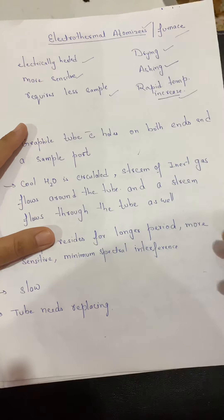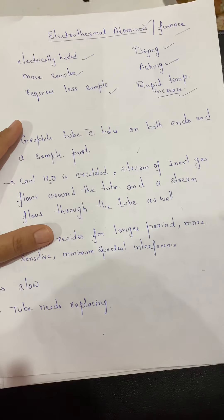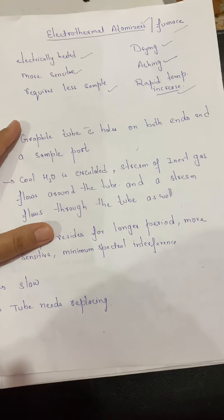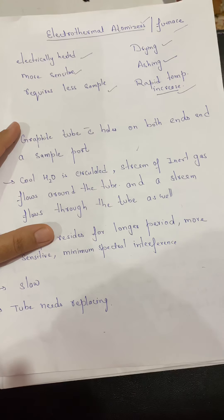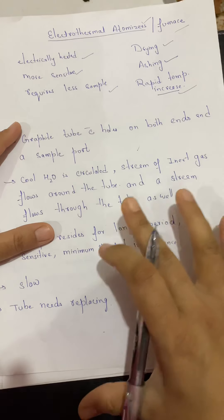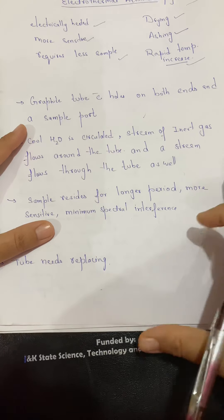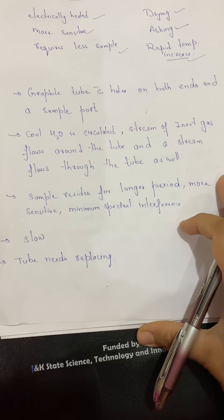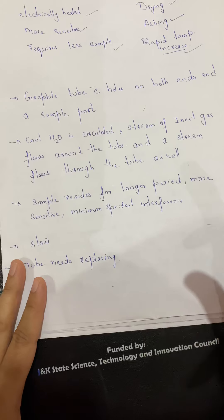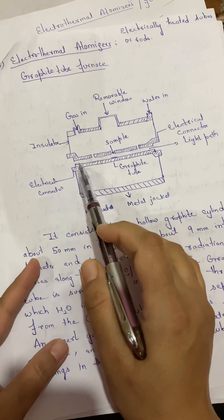After ashing, the temperature is increased further. The exact temperature depends upon the analyte under study — different analytes require different temperatures, just as in flame atomizers the fuel-oxidant mixture depends on the sample. When the temperature is high enough, the molecules break down and dissociate into an atomic state, and those atoms get irradiated by light.